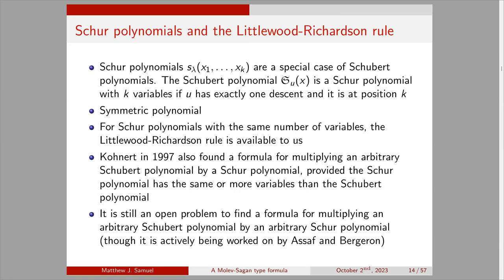Schur polynomials were studied much earlier than Schubert polynomials but are a special case: S_u(x) is a Schur polynomial in k variables if u has exactly one descent at position k and the polynomial is symmetric in x_1 through x_k. If two Schubert polynomials have the same number of variables, we can multiply them positively using the Littlewood-Richardson rule. More generally, Kohnert in 1997 found a formula for multiplying an arbitrary Schubert polynomial by a Schur polynomial, provided the Schur polynomial has the same or more variables. Multiplying two arbitrary Schubert polynomials remains an open problem.